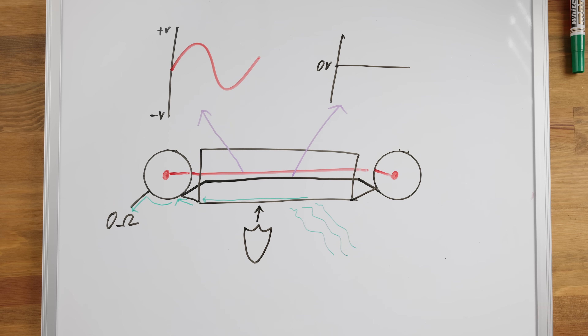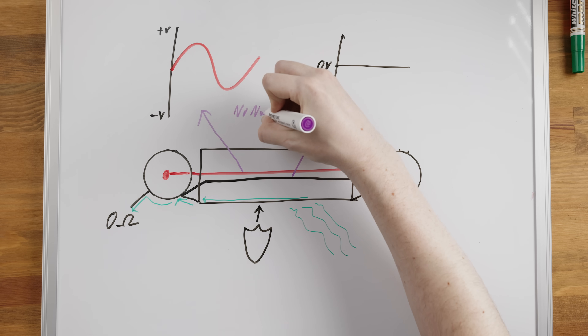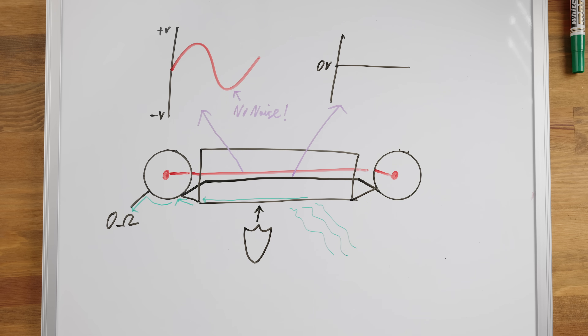The noise then follows the low impedance path to ground and in ideal circumstances nothing gets through the shield to reach either inner conductor, leaving us with a clean noise-free signal at the receiving end. But shielding is mostly only effective at very high frequencies and it's not going to do much for lower frequency EMI, so particularly with longer cable runs you can still end up with quite a bit of noise even in the audible band remaining in your signal even though the cable was shielded.